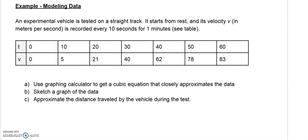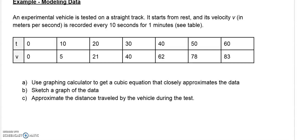For example, modeling data: an experimental vehicle is tested on a straight track. It starts from rest, and velocity V in meters per second is recorded every 10 seconds for one minute.